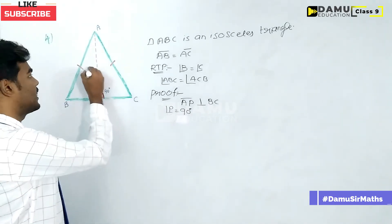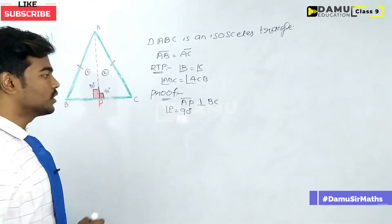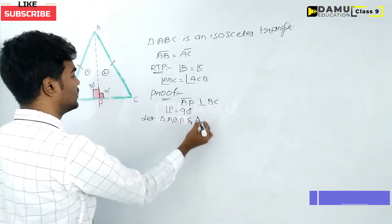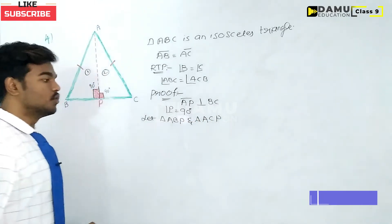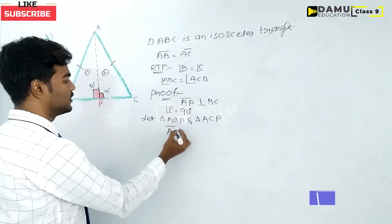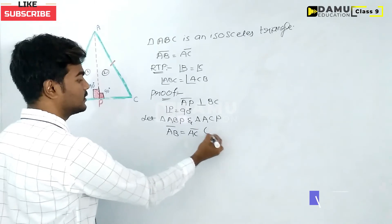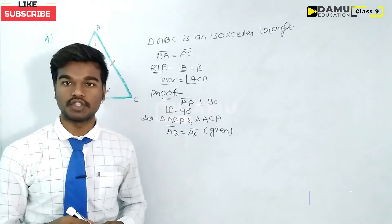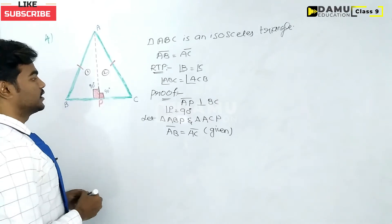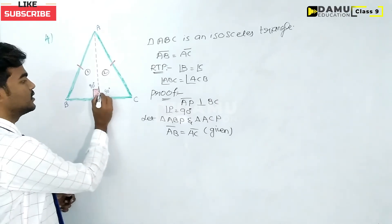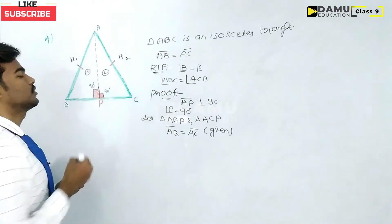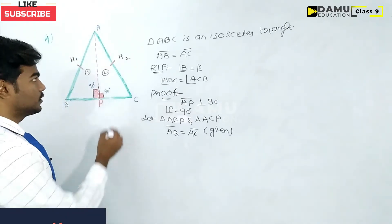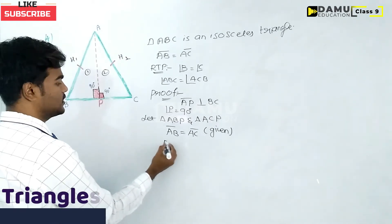Let us consider two triangles: triangle ABP and triangle ACP. In triangle ABP and ACP, AB is equal to AC — this is the given condition since ABC is an isosceles triangle. The hypotenuse of each right triangle is AB and AC respectively, and since AB equals AC, the hypotenuses are equal.